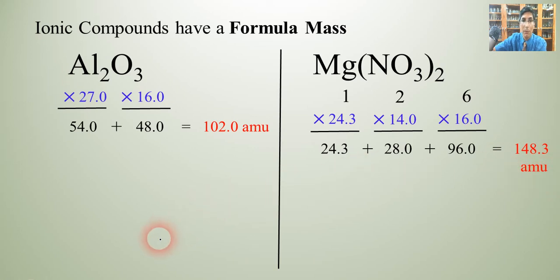Now you might remember that Joseph Proust over 200 years ago was one of the first to discover that a compound has the same percentage mass for an element no matter where that compound is found. Well using this formula mass idea we can actually determine what those percentages are.